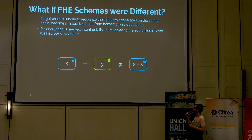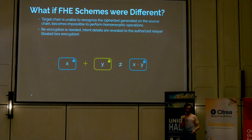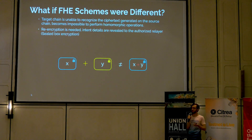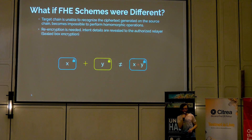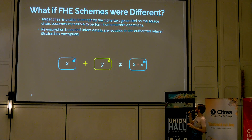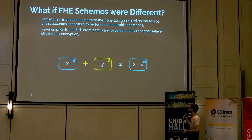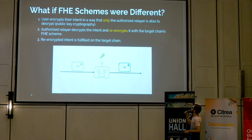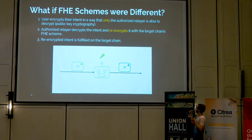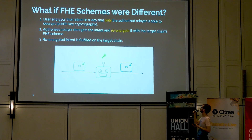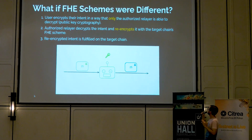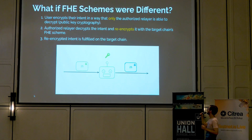So what if the FHE schemes were different? When you encrypt something on the source chain and the target chain can recognize it and perform homomorphic operations — that's the ideal case. But if the FHE schemes were different, the target chain won't be able to recognize the text from the source chain. So re-encryption is needed. In this case, intent details are revealed to the authorized relayer — the relayer decrypts the intent and re-encrypts it so the target chain is able to recognize it and perform homomorphic operations. The user encrypts their intent in a way that only the authorized relayer is able to decrypt, using public key cryptography. The authorized relayer decrypts the intent and re-encrypts it with the target chain's FHE scheme, and the re-encrypted intent is fulfilled on the target chain.